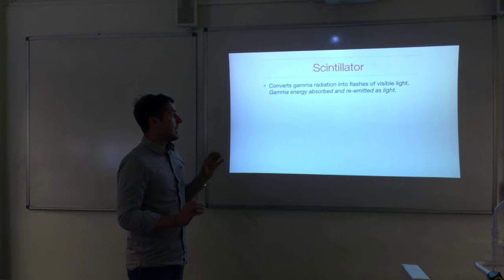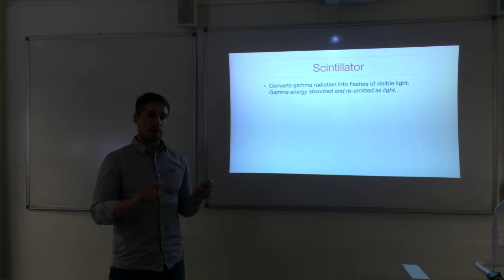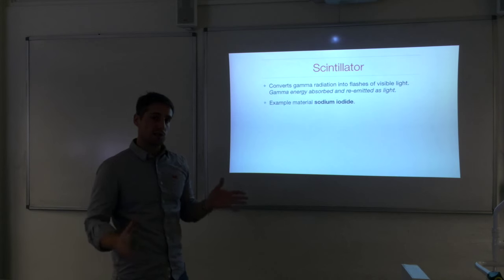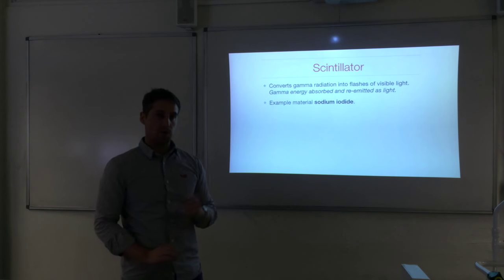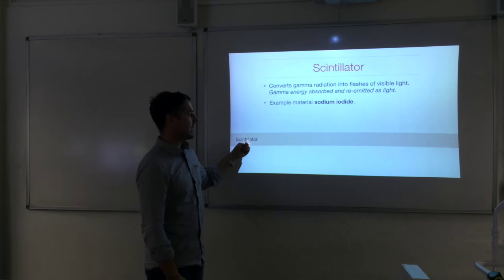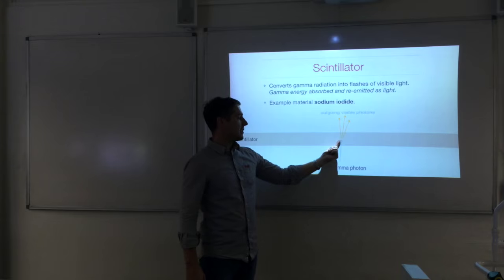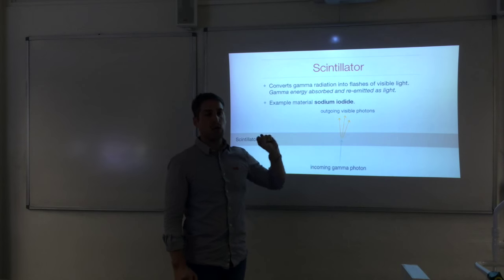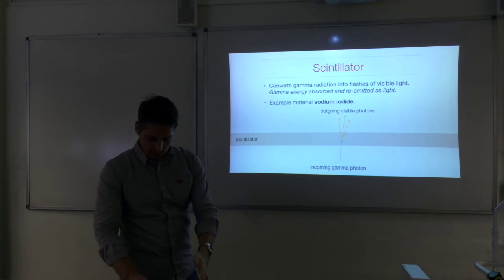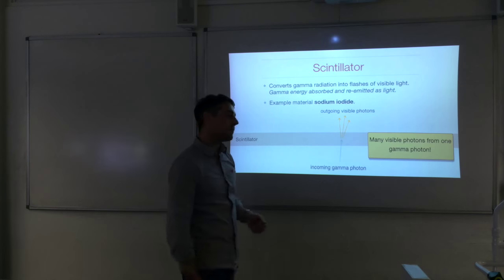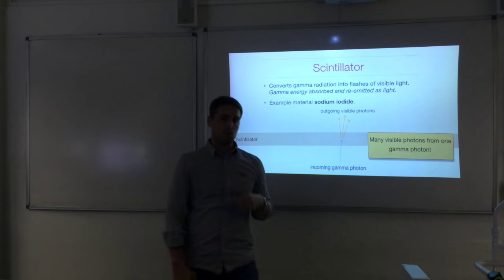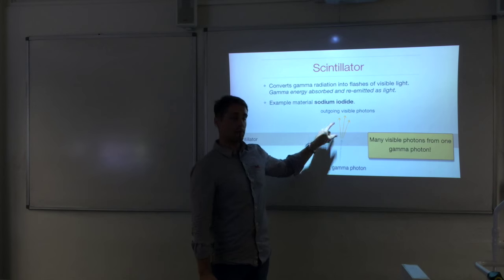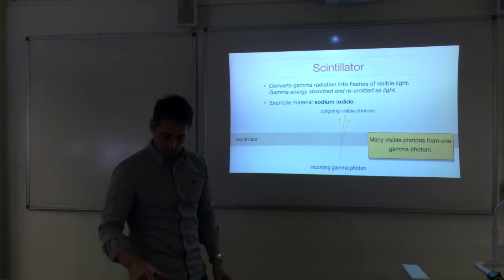The scintillator converts gamma photons into many visible photons. The energy is absorbed in a crystal such as sodium iodide and re-emitted as light. An incoming gamma photon is absorbed and many visible photons are emitted — a flash of light. It is important to appreciate that you get many visible photons from just the one gamma photon because the gamma photon has high energy while visible photons have low energy, so conservation of energy requires more of them.